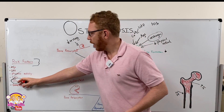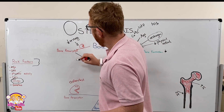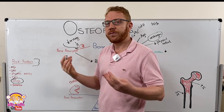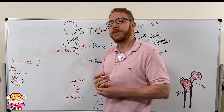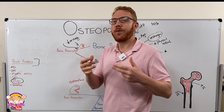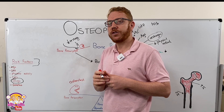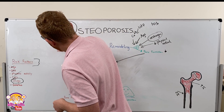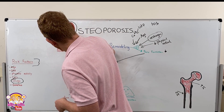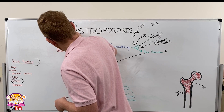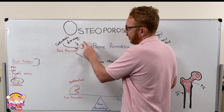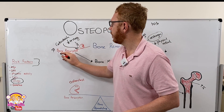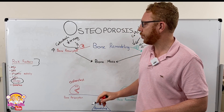Regarding drugs, corticosteroids — commonly used for autoimmune conditions or asthma — actually increase the activity of osteoclasts, resulting in an increase in bone reabsorption.